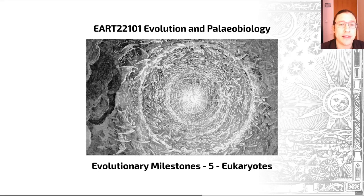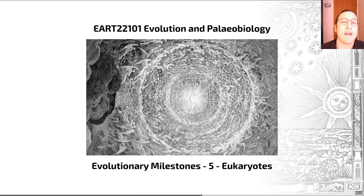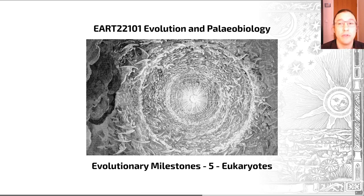Hello there and welcome back to video number five of evolutionary milestones. Everything until this point that we've looked at has been a member of the prokaryotes — so archaea or bacteria. These are generally single-celled, and the cells have a structure described in video four: a single circular chromosome sitting in the cytoplasm.